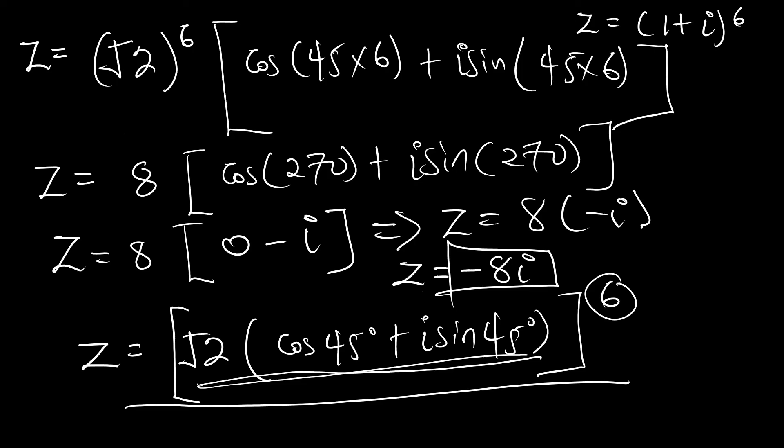So when you raise (1 + i) to the 6th power, you get −8i. This is how we solve complex numbers to high powers or fractional powers using De Moivre's theorem. It's very simple: convert from Cartesian to polar form, raise the modulus to the power, multiply the argument by the power, then simplify to get your answer.